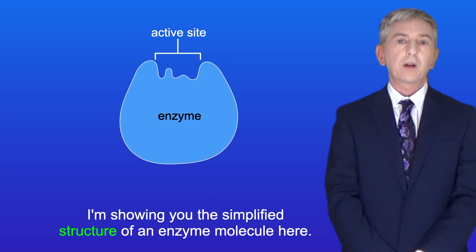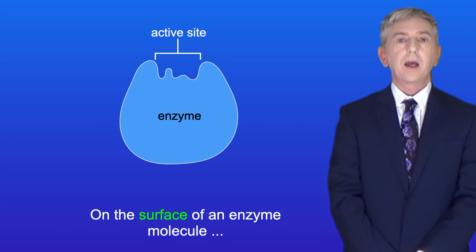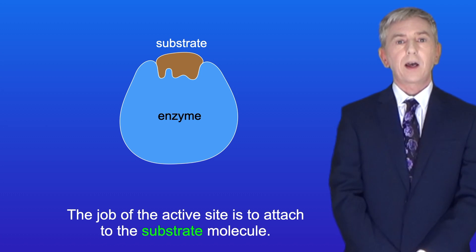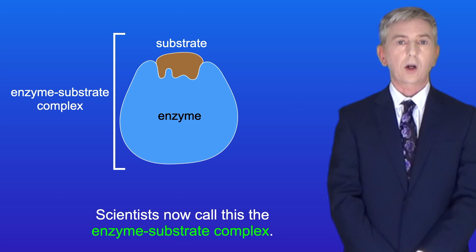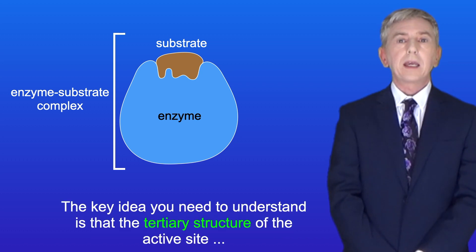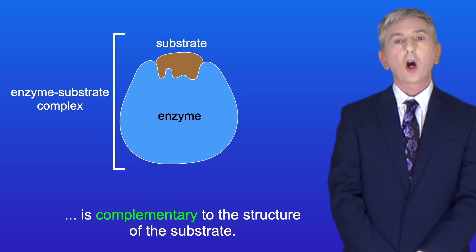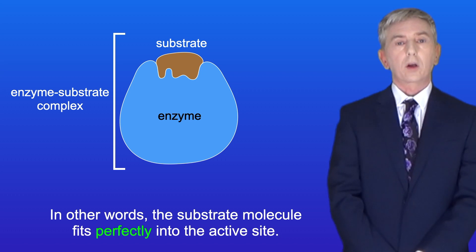I'm showing you the simplified structure of an enzyme molecule here. On the surface of an enzyme molecule, we find a groove which scientists call the active site. The job of the active site is to attach to the substrate molecule — scientists now call this the enzyme-substrate complex. The key idea is that the tertiary structure of the active site is complementary to the structure of the substrate; in other words, the substrate molecule fits perfectly into the active site.